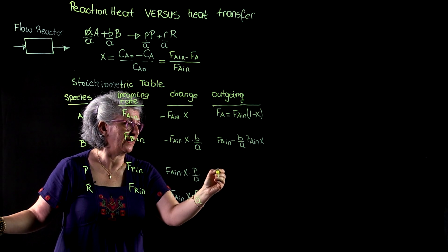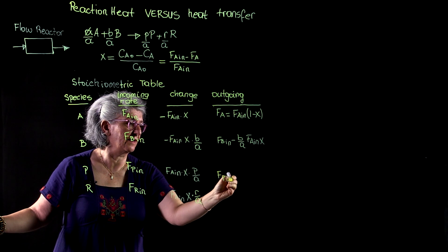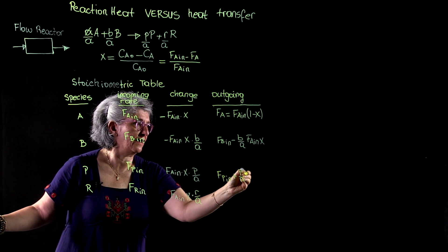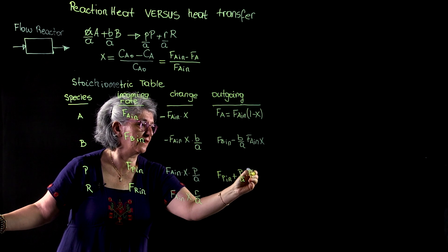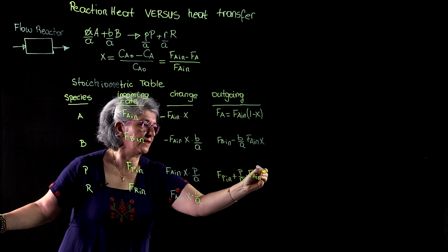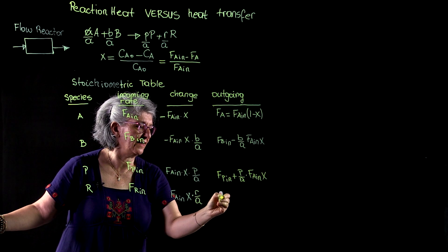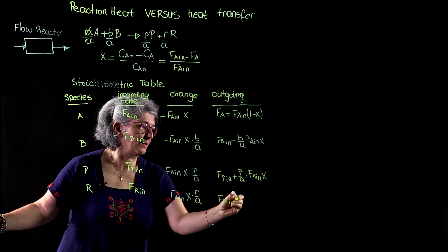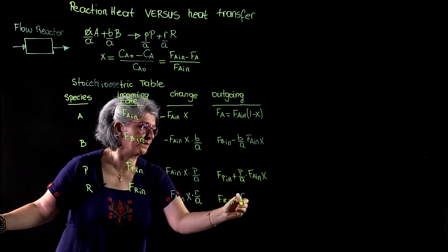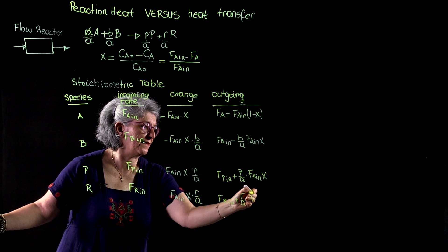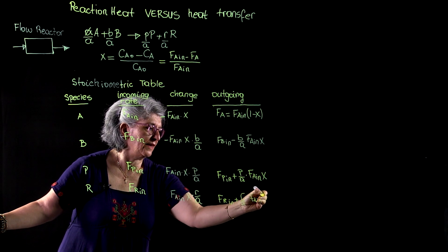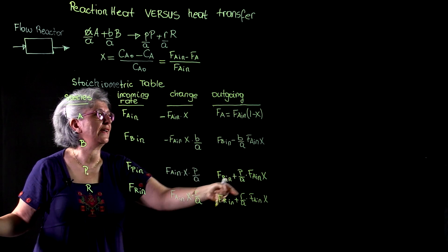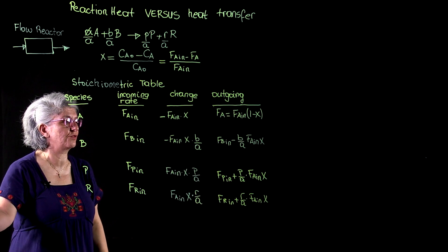So this is FP in plus P over A times FA in times X. And this is FR in plus R over A times FA in times X.